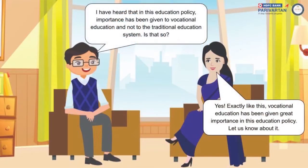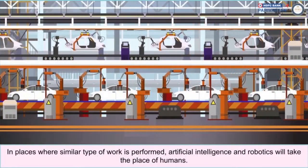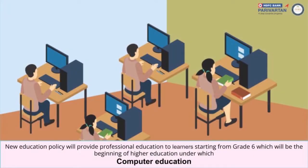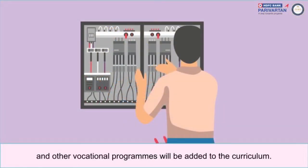I have heard that in this education policy, importance has been given to vocational education and not to the traditional education system. Is that so? Yes, exactly. Vocational education has been given great importance. In places where similar type of work is performed, artificial intelligence and robotics will take the place of humans. The new education policy will provide professional education to learners starting from Grade 6, which will include computer education, carpentry, and other vocational programs added to the curriculum.